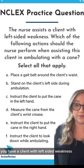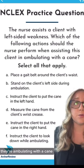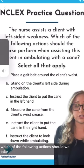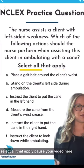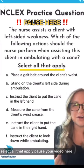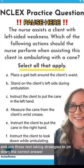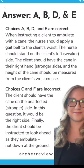You have a client with left-sided weakness and they're ambulating with a cane. Which of the following actions should we take? Select all that apply. Pause your video here and use those test-taking strategies to jot down the correct answer.